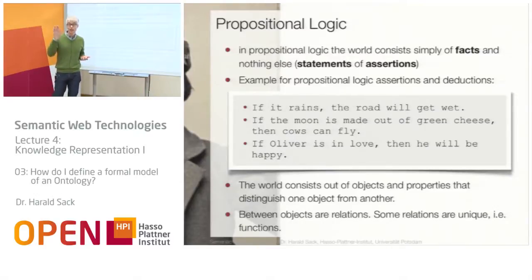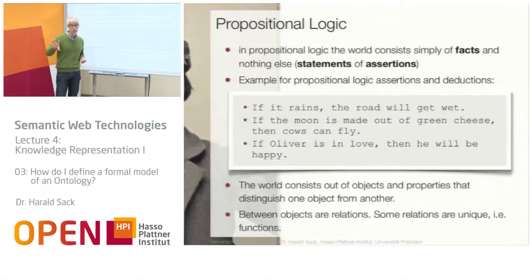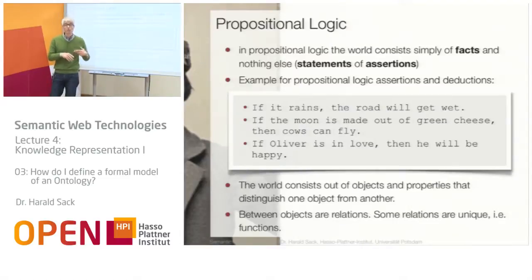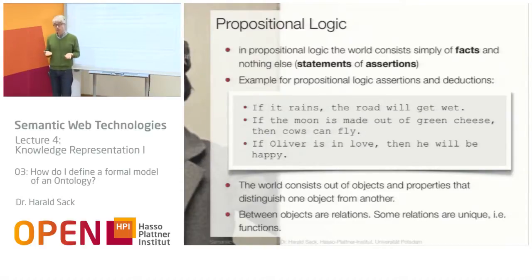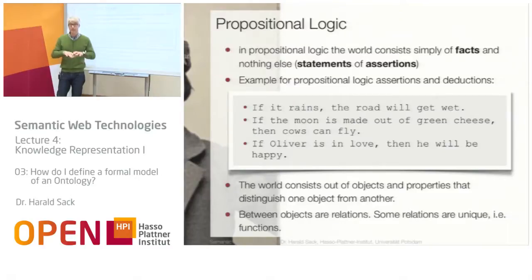Or, I can also express something like: if Oliver is in love, then he will be happy. The world in propositional logic consists of single objects and properties. Properties distinguish one object from another, and between objects there are relations, some of which are unique — meaning they are functions. But in propositional logic, you can only make statements about single objects; you cannot summarize objects into a set or class.